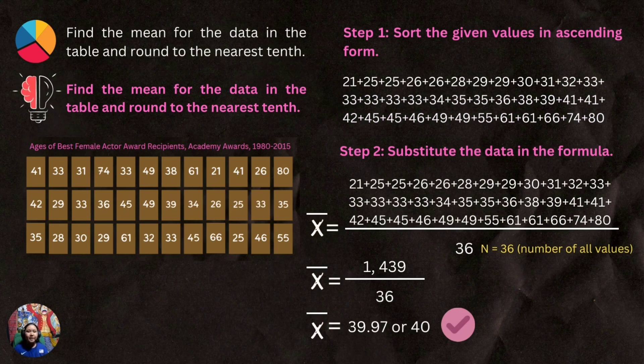To find the mean, all we have to do is two simple steps. Step 1: sort the given values in ascending form or arranging them from small to largest numbers. Step 2: substitute the data in the formula and then simply divide it by the number of all values, which is 36. It will give us a sum of 1439 over 36, and the final answer would be 39.97 or 40.